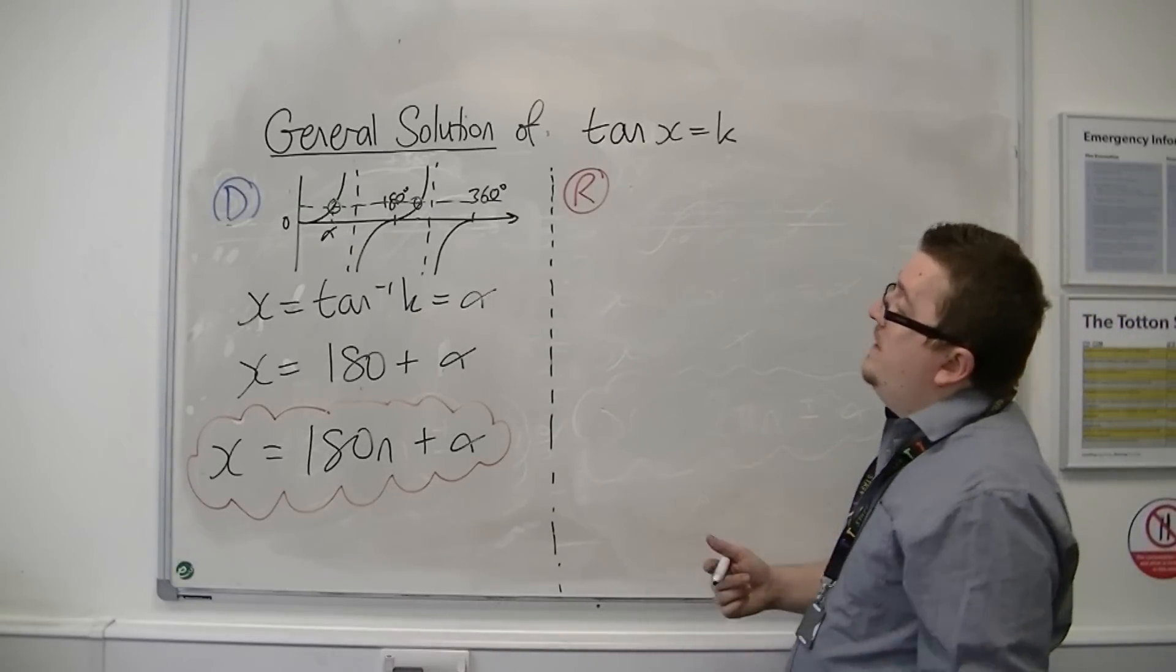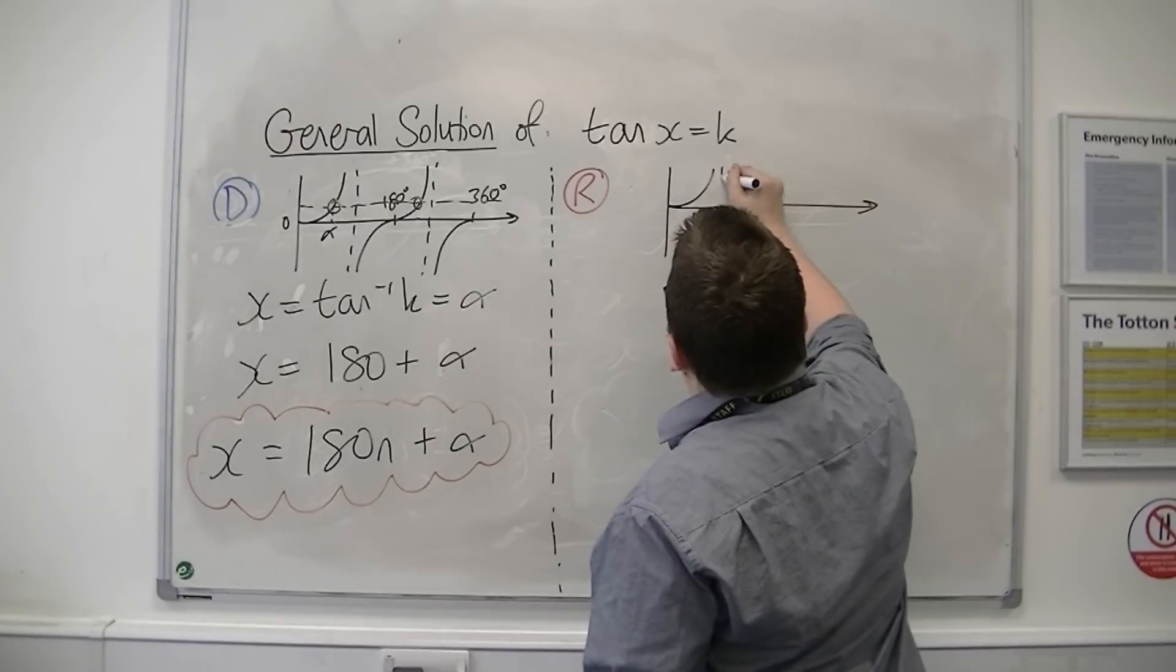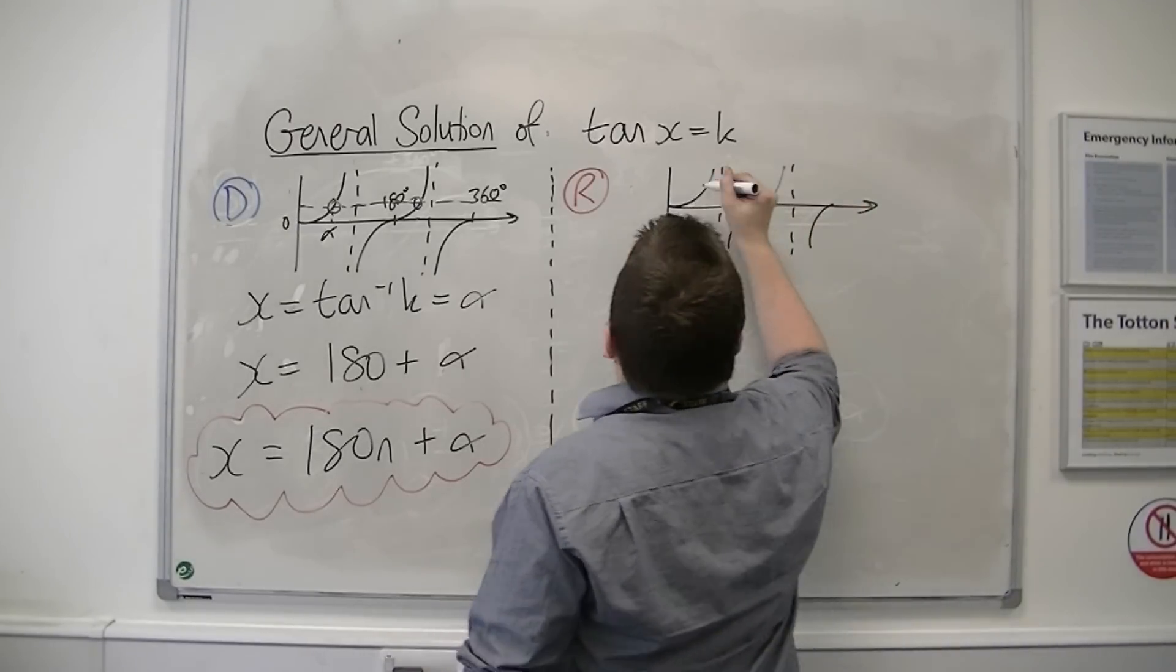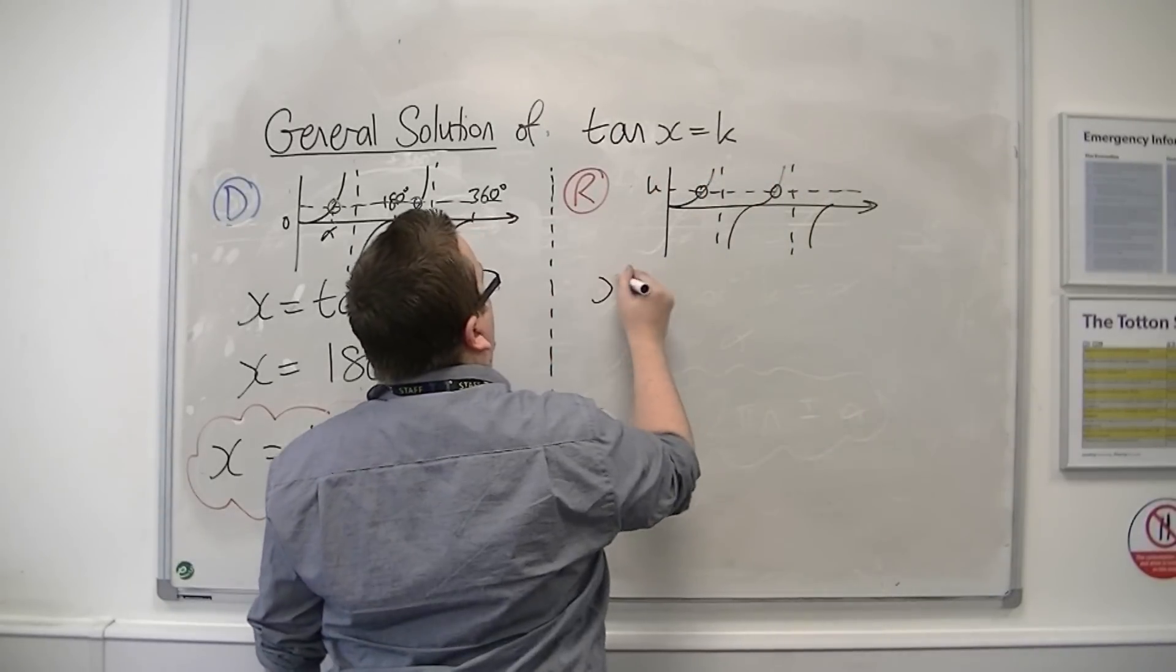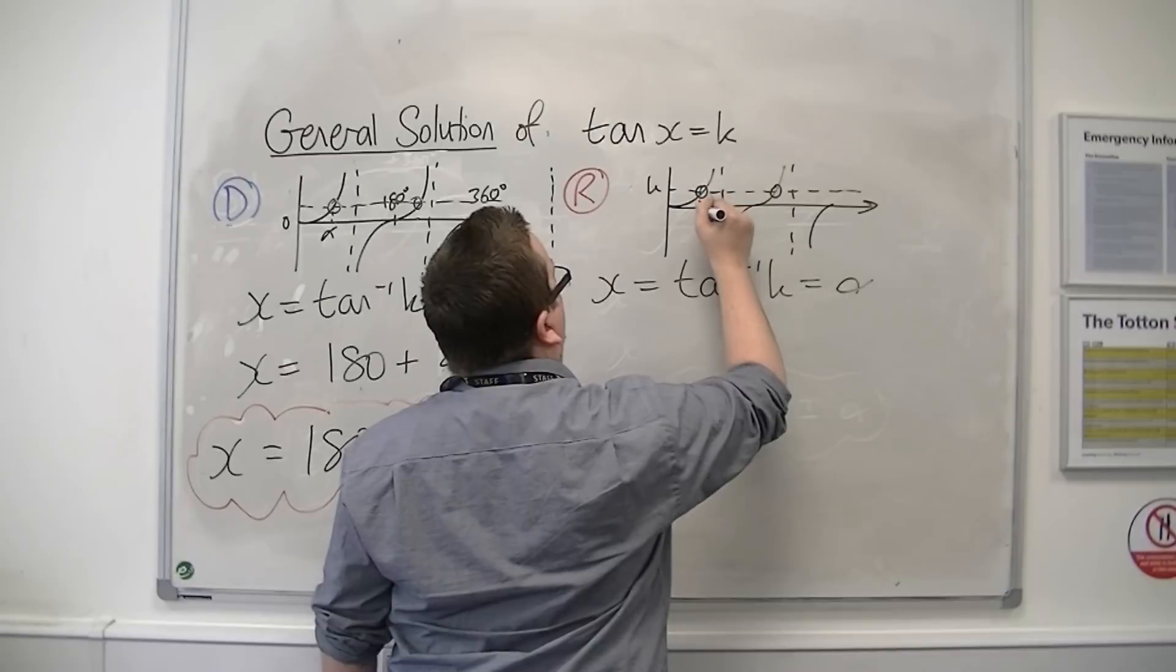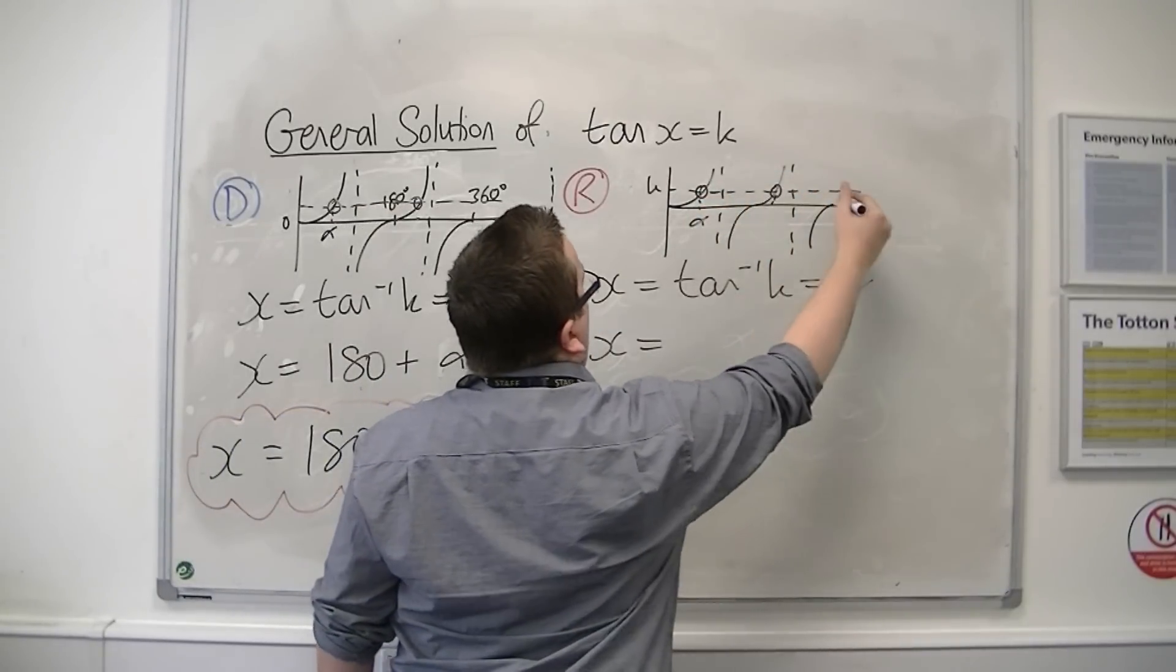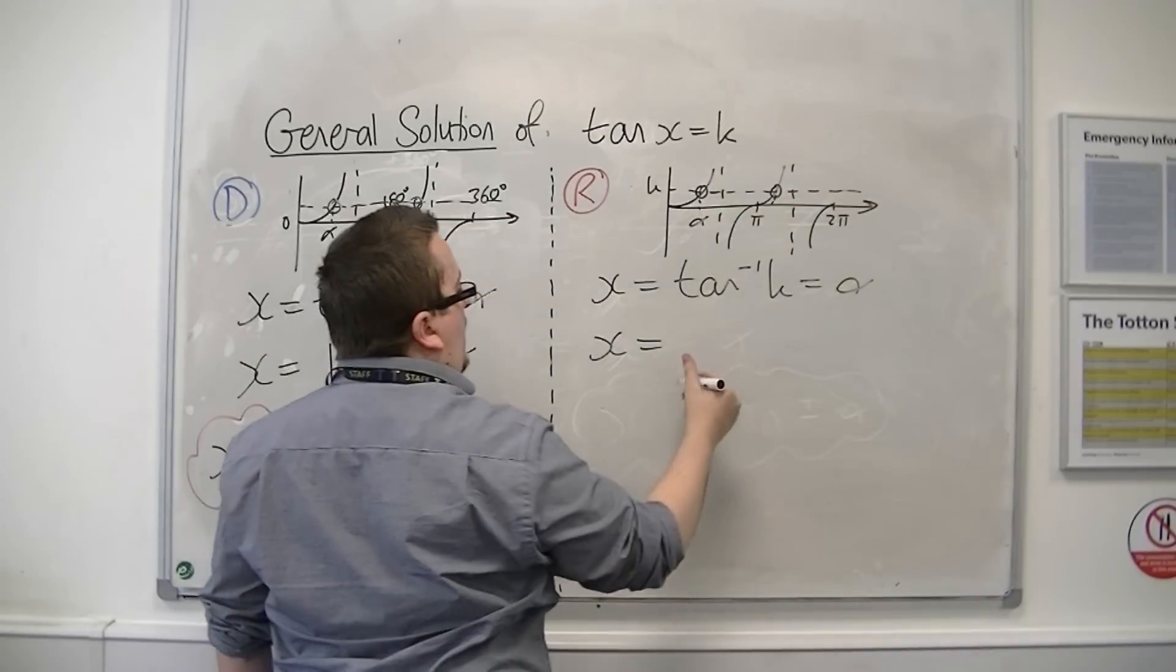So for radians, it's a very similar story. So there's my k, there's my two solutions. The first one's going to be alpha. The second one, because we're in radians, is pi plus alpha.